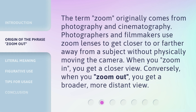The term zoom originally comes from photography and cinematography. Photographers and filmmakers use zoom lenses to get closer to or farther away from a subject without physically moving the camera. When you zoom in, you get a closer view. Conversely, when you zoom out, you get a broader, more distant view.